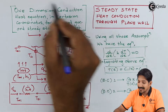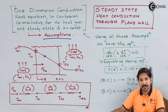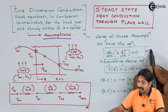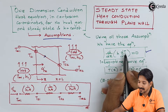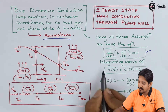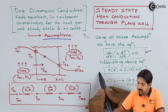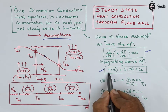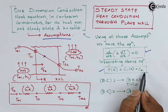With all these assumptions and with the general equation that we have derived previously, we are left with this equation: d/dx (K dT/dx) = 0. Now if I integrate it twice, I shall get an equation like T(x) = C1·X + C2.